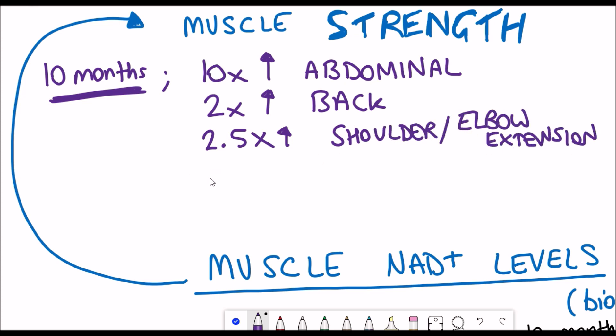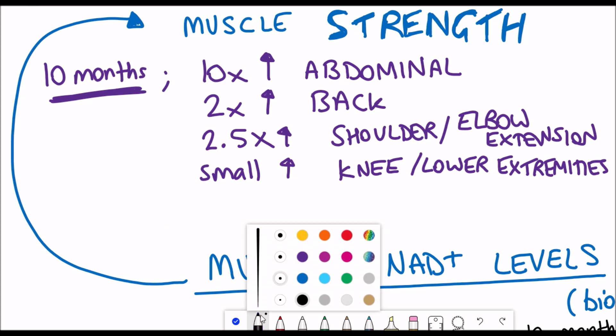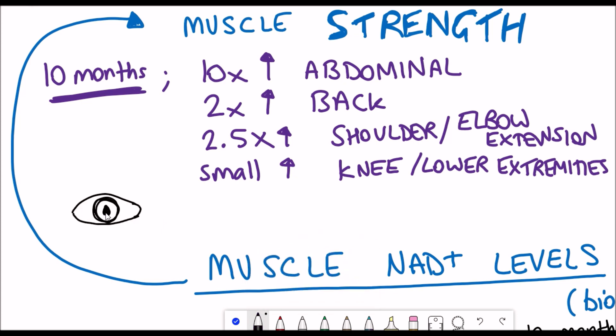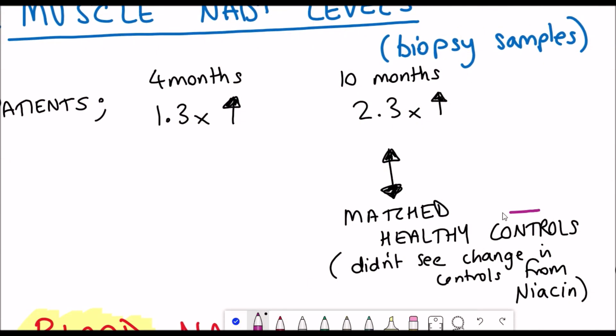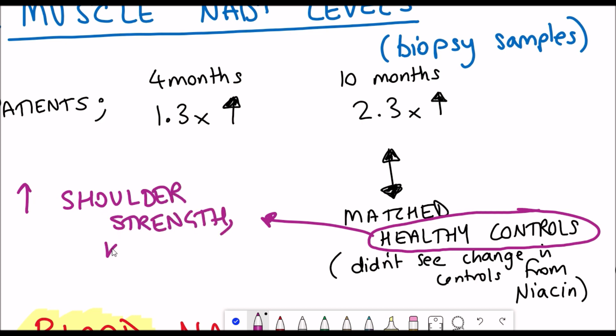Back to the results. They saw increase in some of the muscles, such as the abdominal muscle, the back muscle, shoulder muscles and knee. Although these were to varying effects, but unfortunately they didn't see an improvement in the ocular muscles, which they think is due to the fact that this is one of the first muscles to become defective during mitochondrial myopathy. So what did they see in the healthy controls? Well, they also saw some slight increase in shoulder strength and the extension, despite the fact that the NAD Plus levels in the muscle didn't actually increase.